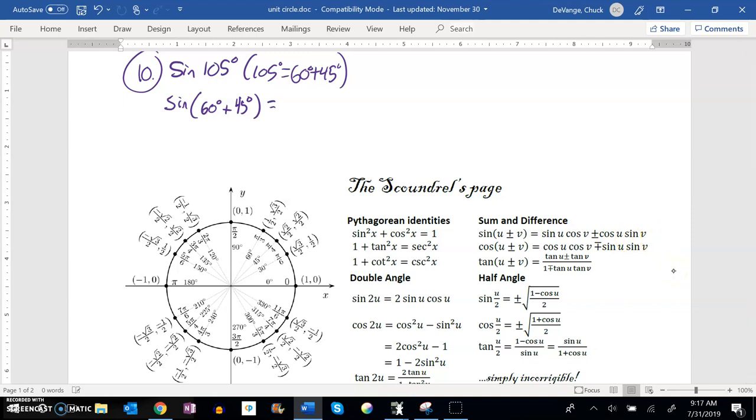So this should be the same as sine of 60 degrees cosine of 45 degrees, same operator, cosine of 60 degrees sine of 45 degrees.